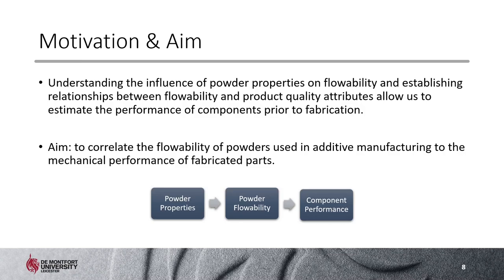This brings us to the main motivation and aim of the research. If we can understand how different powder properties influence powder flowability, and if we can establish relationships between the flowability of the material and the mechanical performance of the part fabricated from it using the additive manufacturing method, we would be able to estimate the performance of the component prior to fabrication. When we have a formulation, we would be able to carry out some tests on the powder that can indicate what the final mechanical properties would be. The main aim of the project was therefore to correlate the flowability of powders used in additive manufacturing to the mechanical performance of fabricated parts.